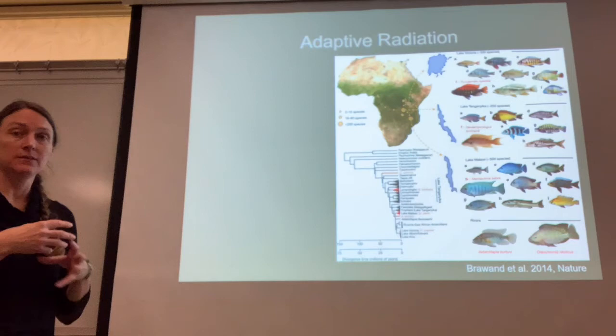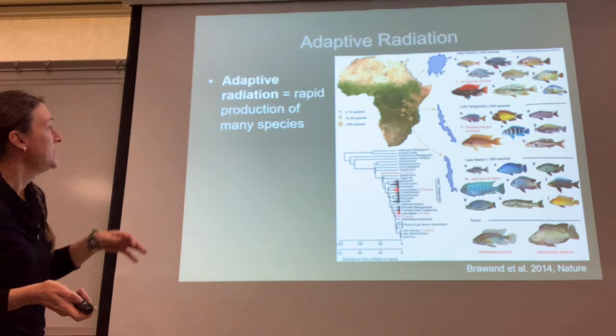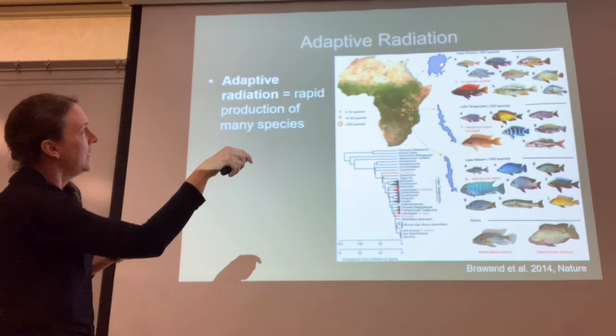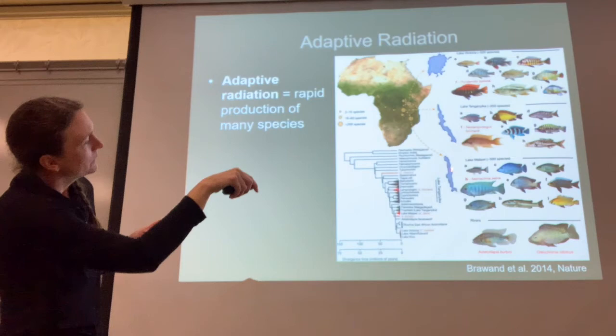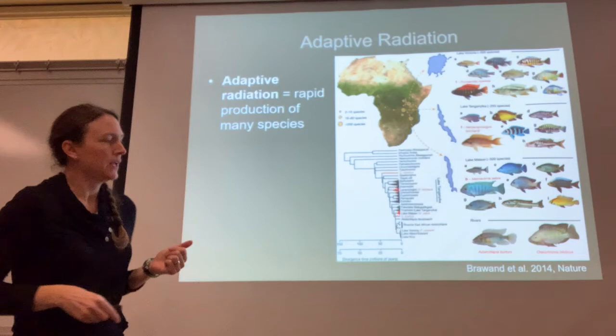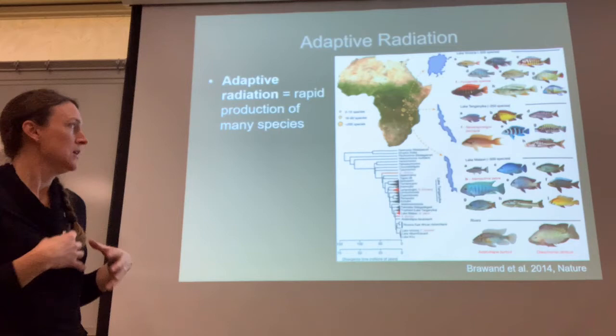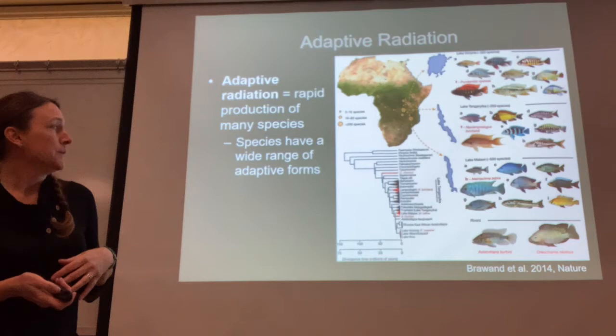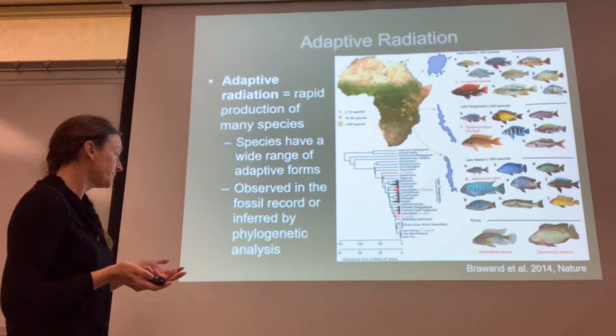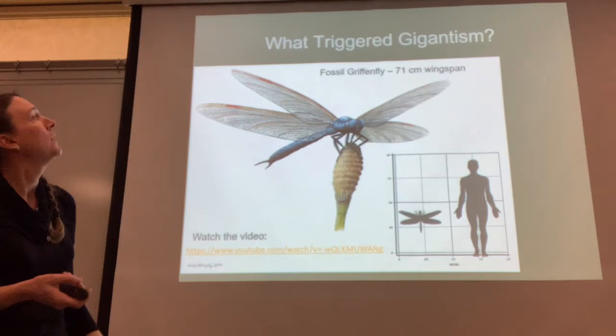I use the word 'radiation' as an adaptive radiation — different from solar radiation. Adaptive radiation is a period of rapid production of many species. Here we have Lakes Victoria, Tanganyika, and Malawi, and you can see there was amazing radiation of fish species called cichlids — hundreds and hundreds of different species arose in these very ancient rift lakes in Africa. Species tend to have a wide range of adaptive forms, and we can find evidence of these radiation periods in the fossil record.